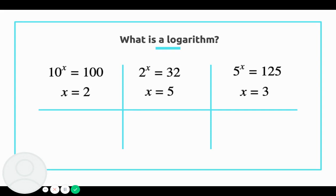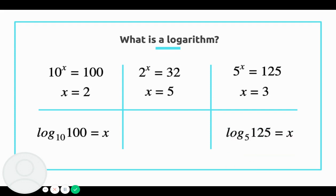But another way I could have asked those questions is using logs. For the first question, I could have asked log base 10 of 100 equals x, and you would have gotten the same answer that x equals 2. For the second question, I could have asked log base 5 of 125 equals x, and that would have given me x equals 3. And log base 2 of 32 is equal to x would have given you x equals 5.